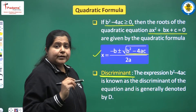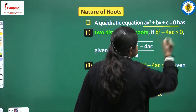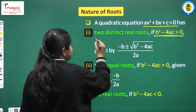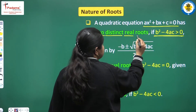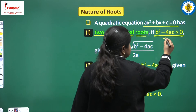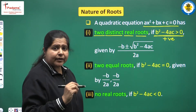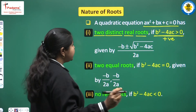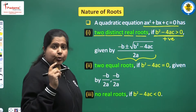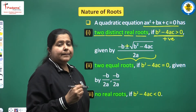The roots depend on the value of the discriminant. If the equation is ax² + bx + c = 0 and b² minus 4ac is greater than 0 — meaning the discriminant is positive — then the equation has two distinct real roots. The two roots are obtained by considering plus and minus separately in the quadratic formula.